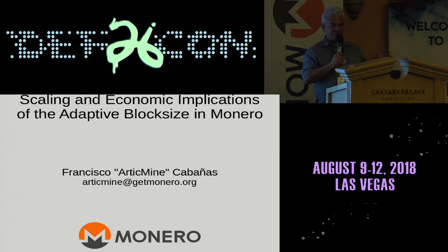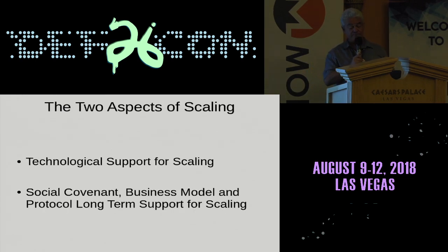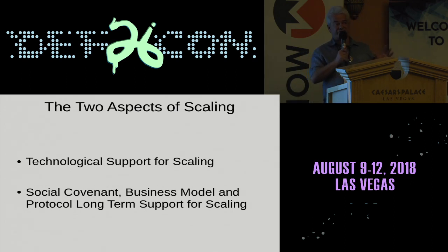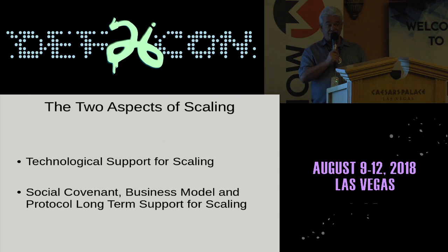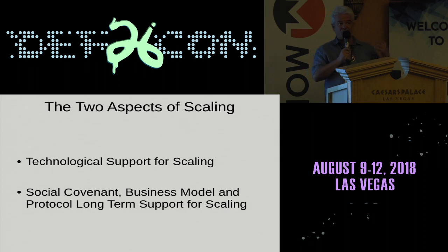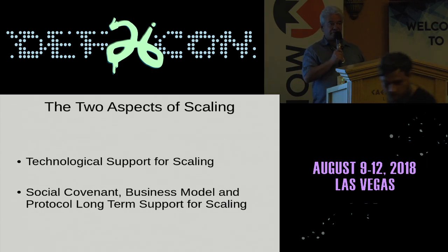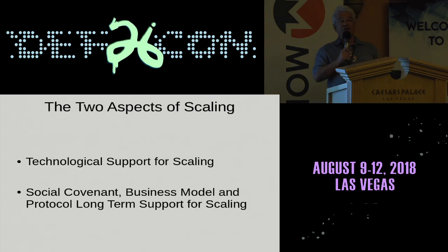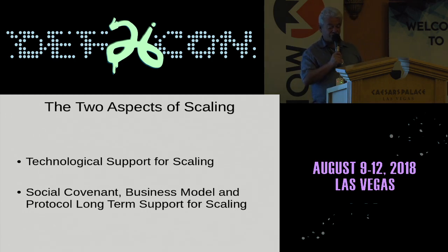What I'm going to be talking about is scaling. I'm going to break my talk into two parts — two aspects of scaling. When people talk about scaling in a cryptocurrency, these are totally commonly conflated. They talk about these two aspects of scaling as one issue, but they're fundamentally different. The first part is technological support for scaling: can the technology actually support scaling today or in the near future? The second question is how does the social covenant and business model and protocol support long-term scaling?